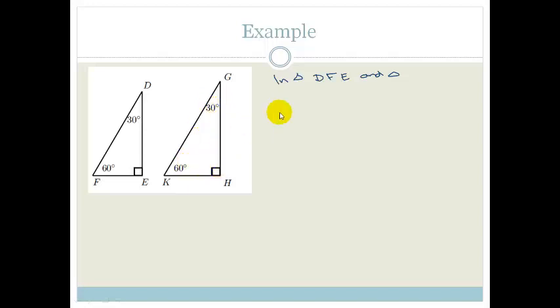So, it's going to be G, K, H. Then we'd know that angle D, angle D equals angle G.